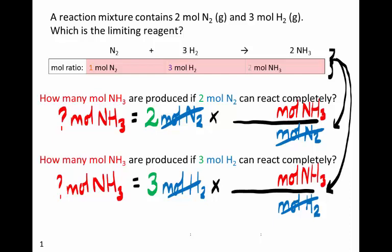Now we know that we get 2 moles of ammonia from every 1 mole of nitrogen that reacts. So that tells us we'll get 4 moles of ammonia if all of the nitrogen is used up.